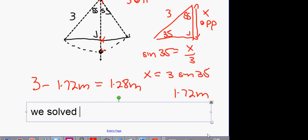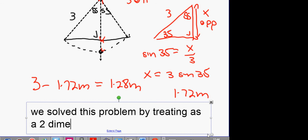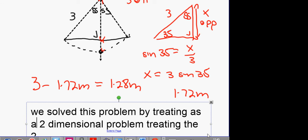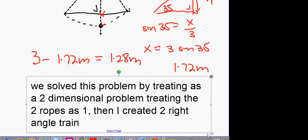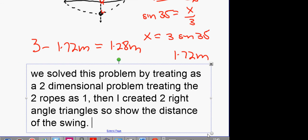So, we solved this problem by treating it as a two-dimensional problem using, treating the ropes as one object. Treating the two ropes as one. Would you agree with that? Then, we, then I created two right-angled triangles. So, you're just explaining your method. Two right-angled triangles to show the max, to show the distance of the swing.